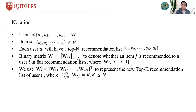Given a recommender system, each user u_i will have a top-k recommendation list. We define a binary matrix W to denote whether an item j is recommended to user i in fair recommendation lists, where W is a binary matrix.